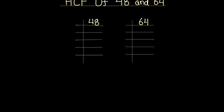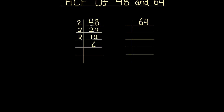In this method, we divide numbers using prime numbers and find their prime factors. So let's divide 48 using the number 2: 2 times 2 is 4, 2 times 4 is 8, 2 times 6 is 12, 2 times 3 is 6, and 3 times 1 is 3. So 48 is fully divided.